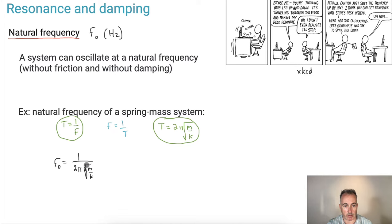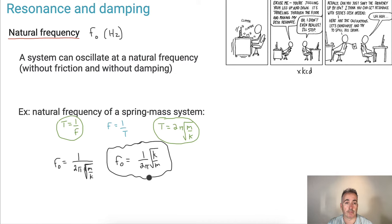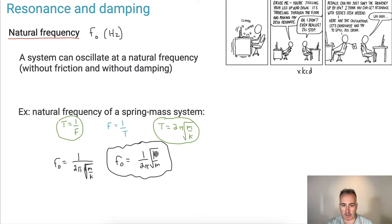I can keep going: f₀ = 1/(2π) times √(k/m), because dividing by a fraction means multiplying by the reciprocal. So the natural frequency for a spring-mass system is (1/2π)√(k/m). You could figure out the same thing for a pendulum — just use the pendulum period equation T = 2π√(L/g) and take 1 over that. So you can actually figure out lots of things even if there's no formal equation given to you.